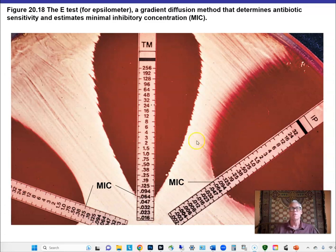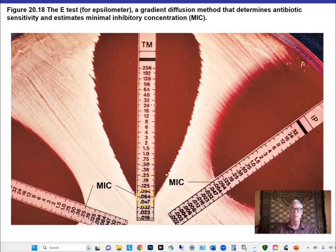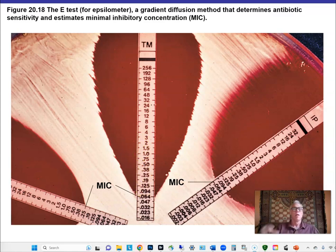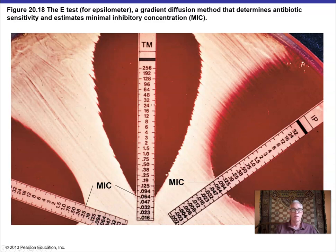Another method uses antibiotic-impregnated strips in a concentration gradient — high concentration at the top, lower at the bottom — placed on an inoculated plate. We can identify the minimum inhibitory concentration for different antibiotics and determine the appropriate dose for a particular patient. When resistance is suspected, multiple antibiotics can be tested simultaneously. A microtiter plate with 96 or 384 wells can also be used for dilution series testing to screen different antibiotics against a particular pathogen.